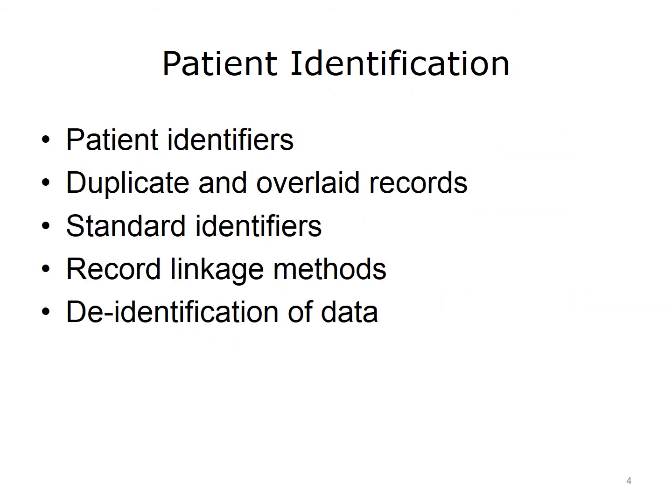In the previous lecture of this unit, we talked about patient identifiers, duplicate and overlaid records, standard identifiers, and record linkage methods. In this lecture, we'll discuss the value and limitations of the de-identification of data.